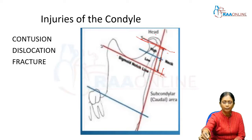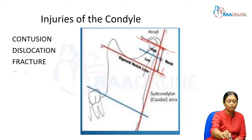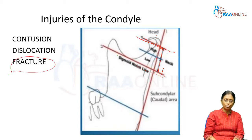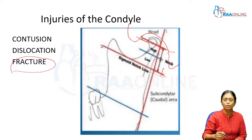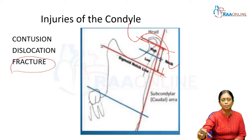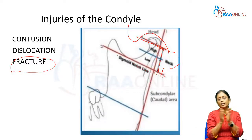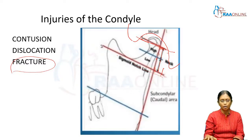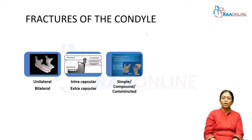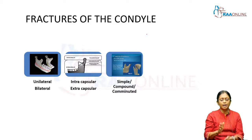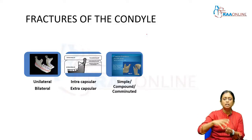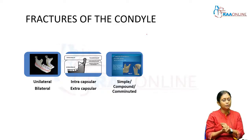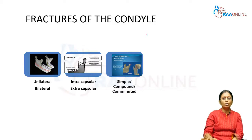So we have condylar head fractures, high neck fractures, low neck fractures, and subcondylar fractures. Apart from fractures, there can be a dislocation or a contusion. Dislocation is the condylar head dislocating from the glenoid fossa. If there is just bruising, injuries, and hemarthrosis happening within the joint, that becomes a contusion. These injuries can be either unilateral or bilateral, and can be within the capsule or outside the capsule, and can be simple, compound, or comminuted.